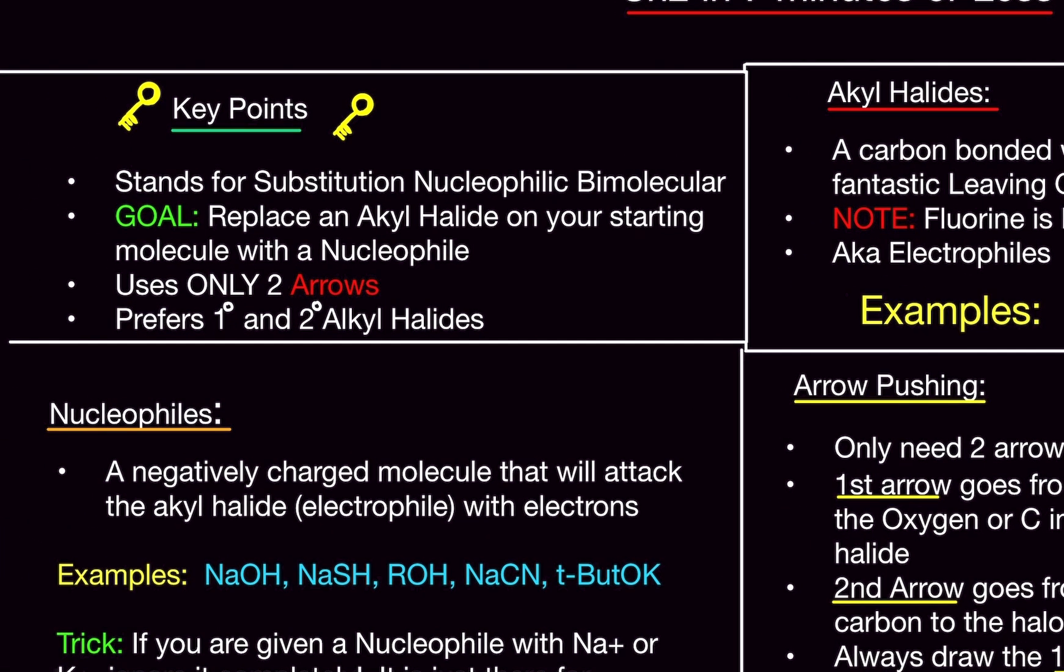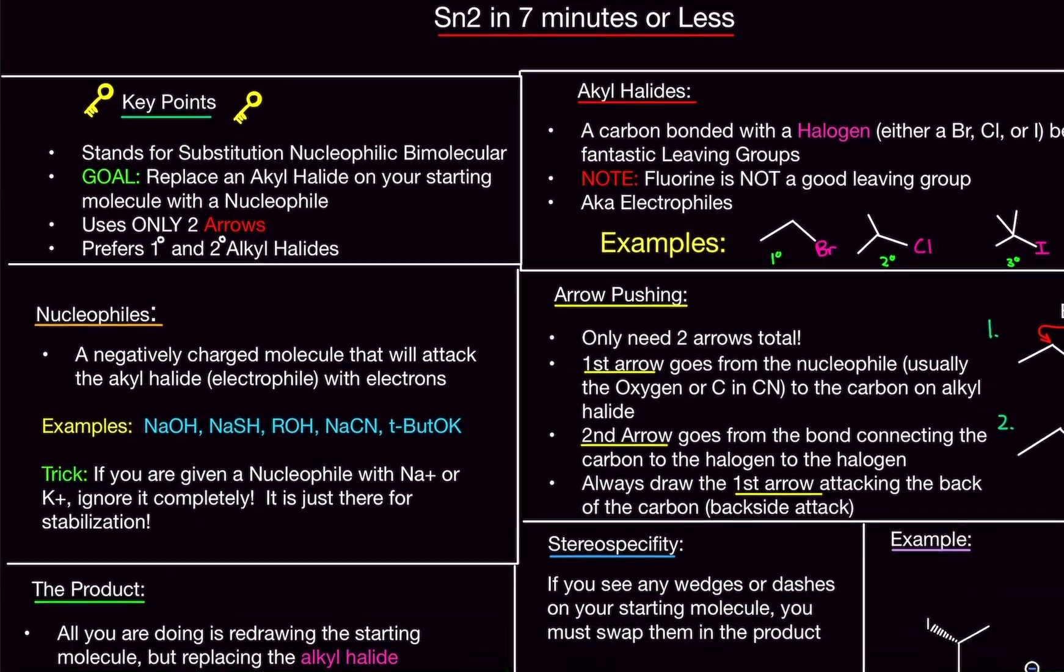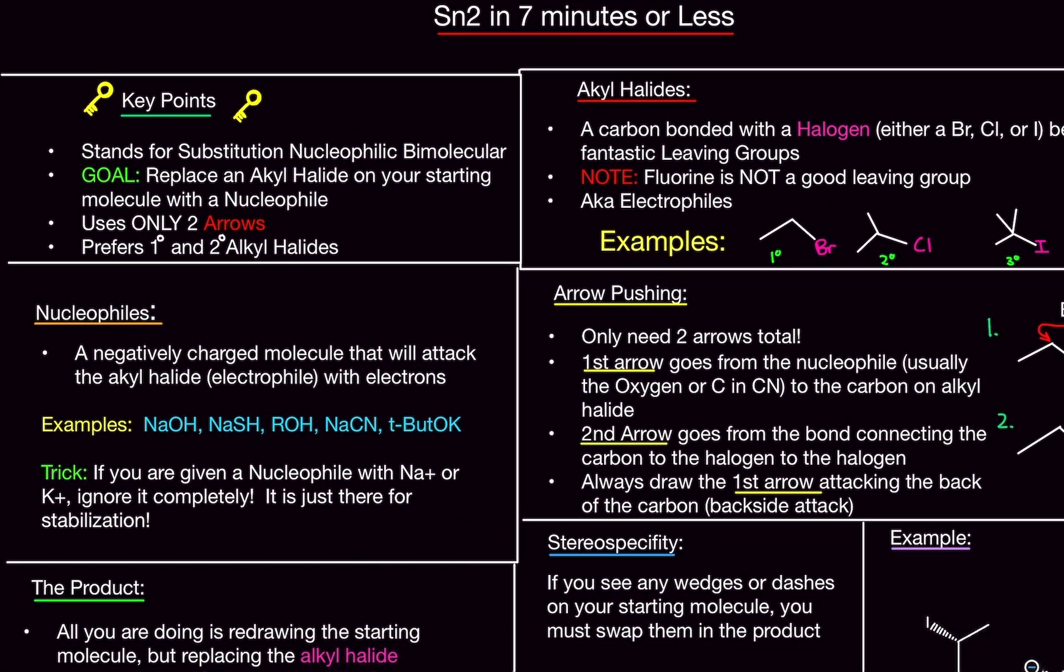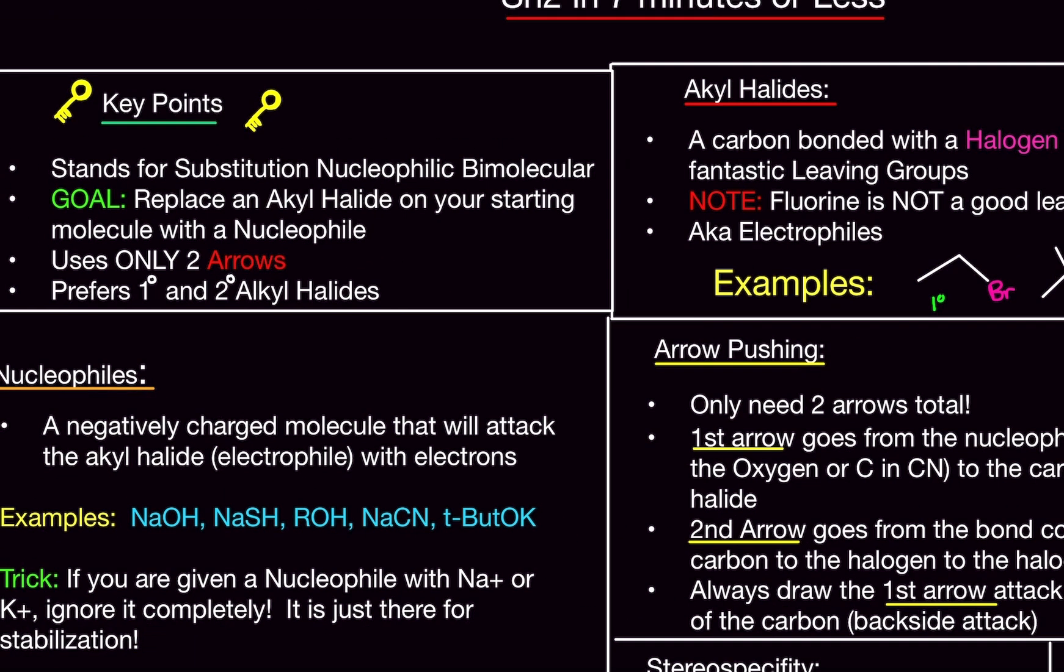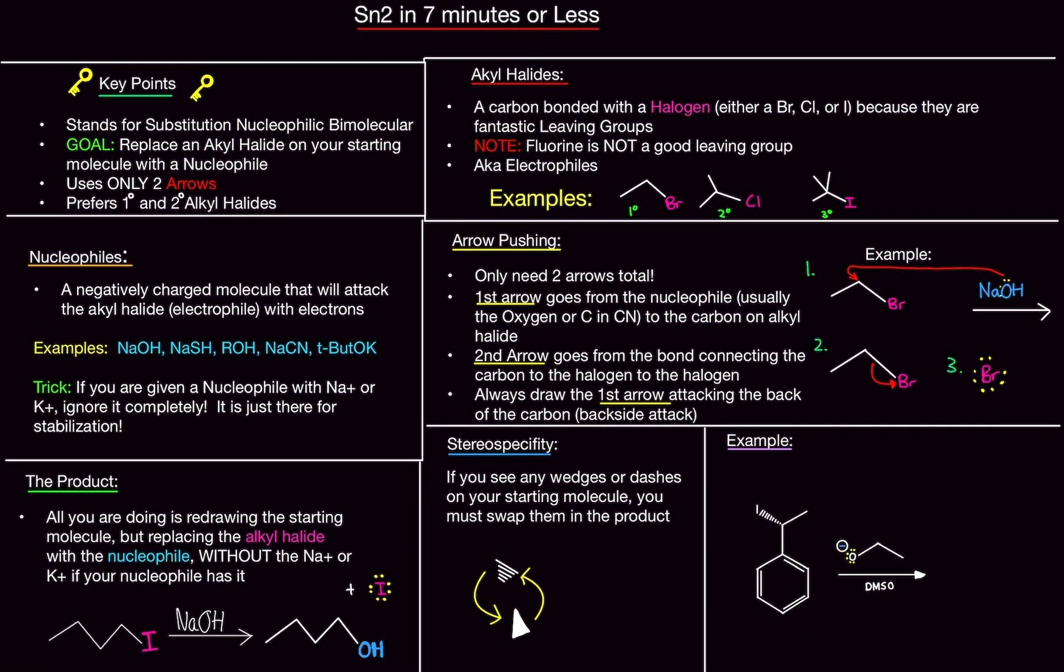SN2 stands for Substitution Nucleophilic Bimolecular for reasons I really don't care about, and you really don't care about either, probably. But here is the meat and potatoes here. All we're doing in SN2 reactions is replacing an alkyl halide from our starting molecule with a nucleophile, which we're given. And it only uses two arrows, and it prefers first degree and second degree alkyl halides.